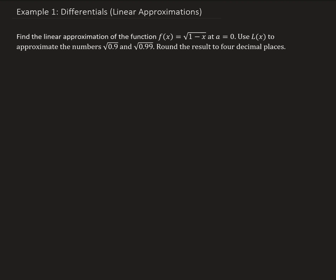So let's go ahead and find our linear approximation, which is going to be denoted by L of x. We're going to use the point-slope form of the line: y minus y1 equals m times x minus x1. So we need the slope, which means we have to take the derivative of our function. Our function is given as the square root of 1 minus x, which is equivalent to 1 minus x to the power of one half.